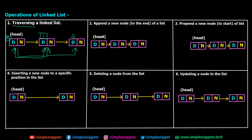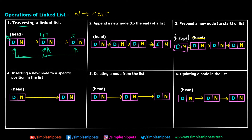The second operation is appending a new node — appending happens at the end of the list. You create one extra node, add some data, and the node also has a next pointer, then you create the link. Third is prepending a new node, which is adding a node at the start of the list. You create a node, add the data, add the next pointer, create the link — but you also have to update the head of the entire linked list to the newly added node, since we've prepended a node at the very beginning.